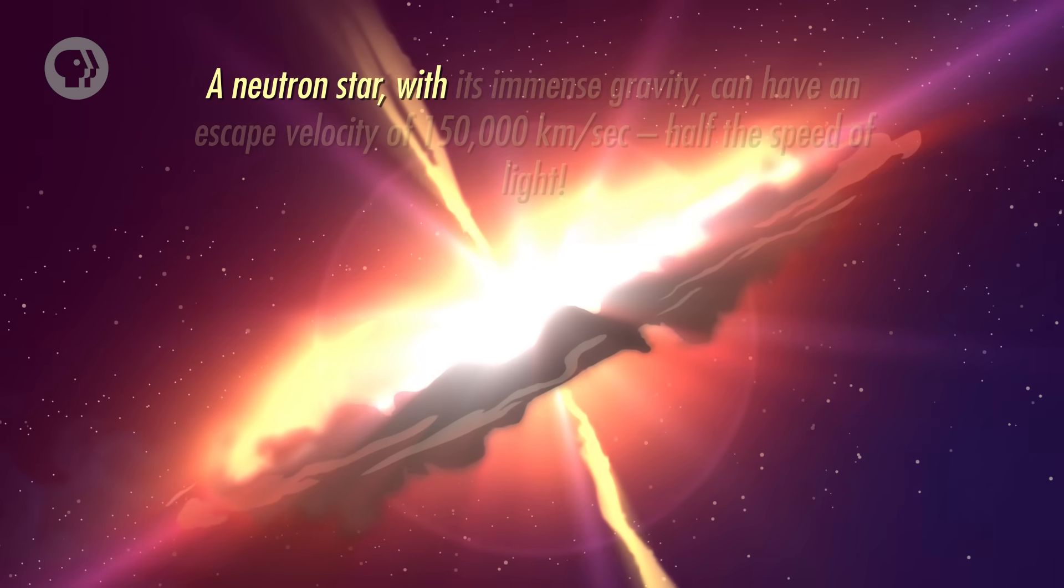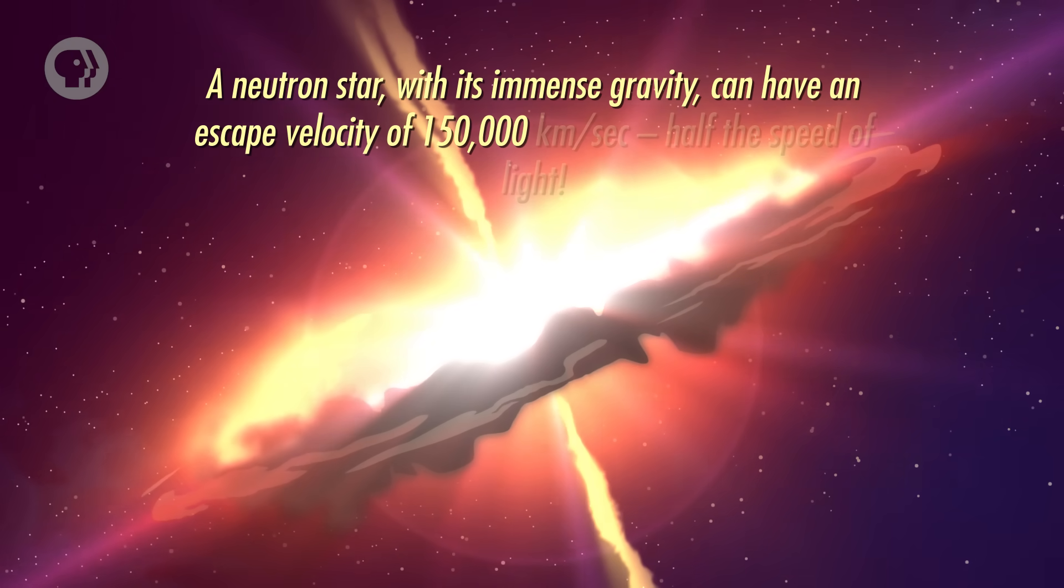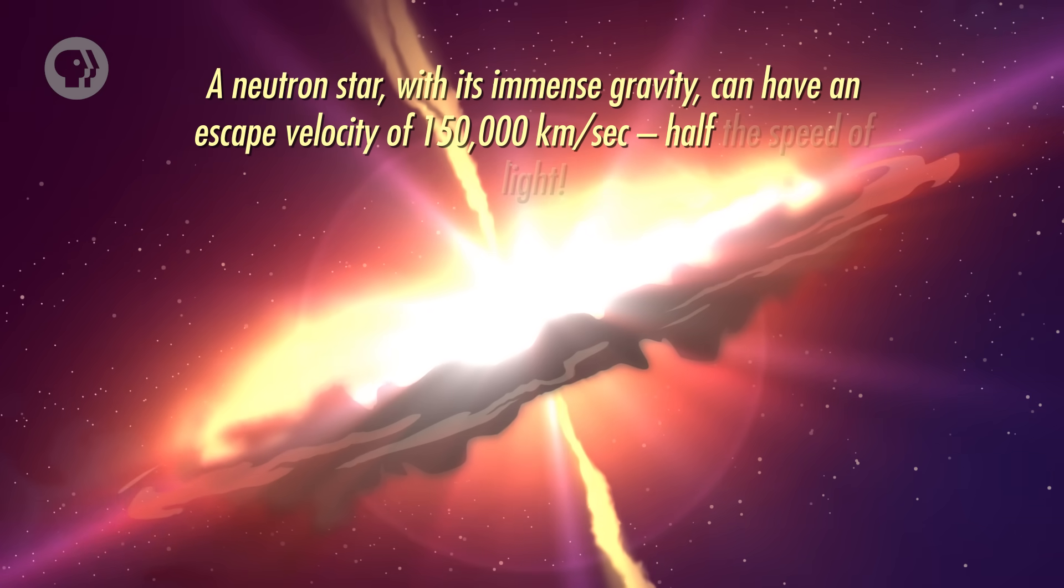A neutron star, with its immense gravity, can have an escape velocity of 150,000 kilometers per second. That's half the speed of light. Keep that in mind, and let's go back to the collapsing core of the star.